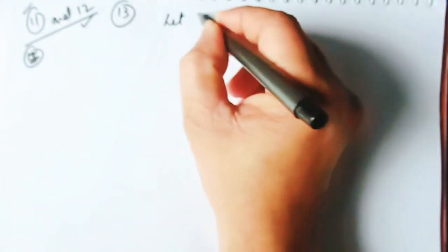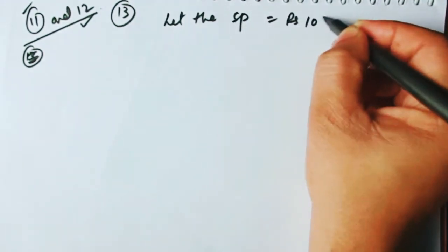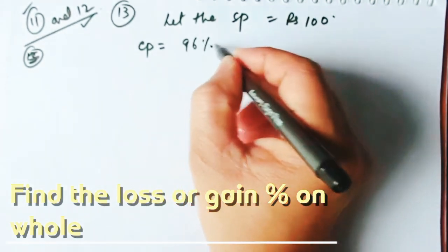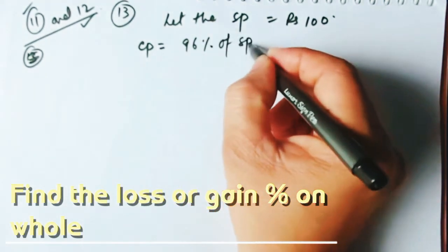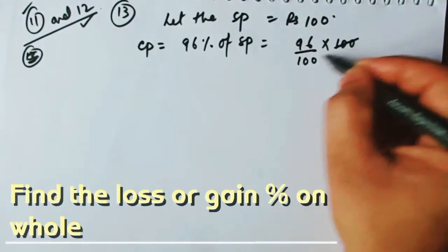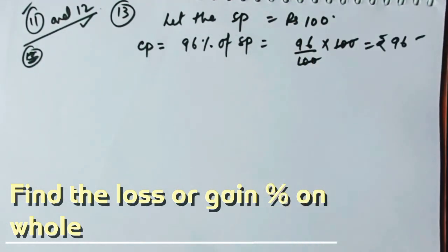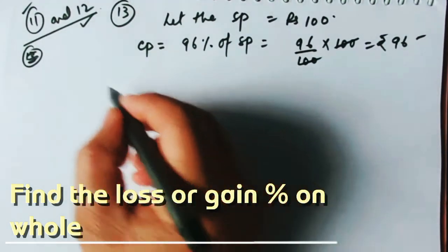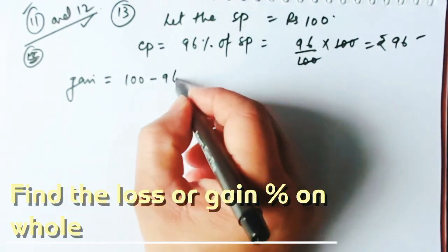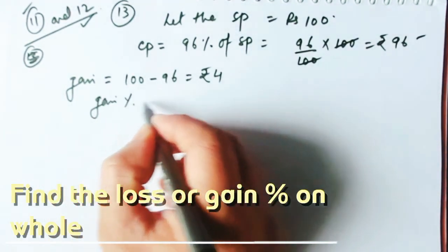In the next problem, the selling price is not known, so let SP = ₹100. The cost price is 96% of the selling price, which equals ₹96. Gain = SP - CP = 100 - 96 = ₹4.